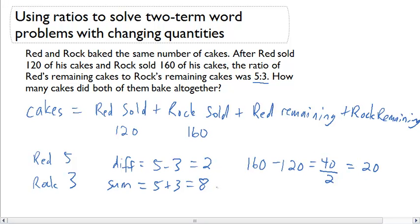We can now use this to figure out what's remaining. 8 times 20 means that there had to be 160 remaining total.